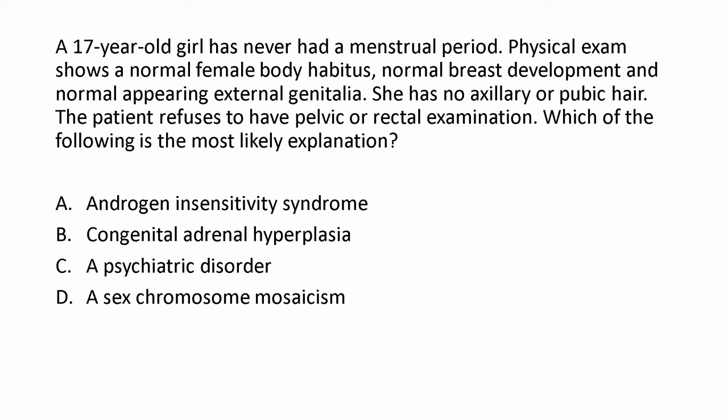A 17-year-old girl has never had a menstrual period — that's primary amenorrhea. Physical exam shows a normal female body habitus, normal breast development, and normal appearing external genitalia. She has no axillary or pubic hair — this is the key word. The patient refuses to have pelvic or rectal examination — this is the second key word.